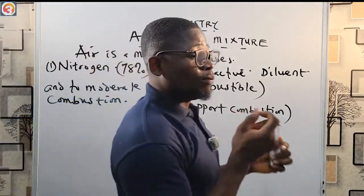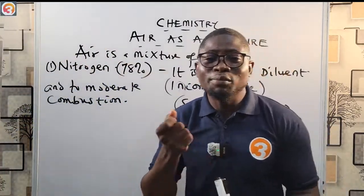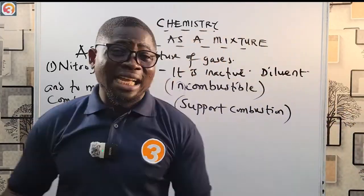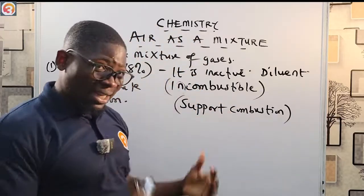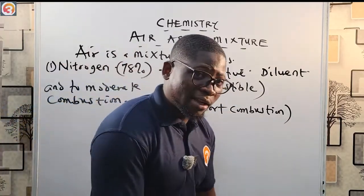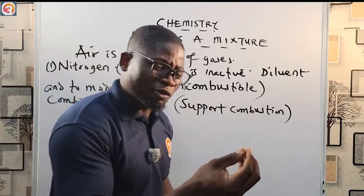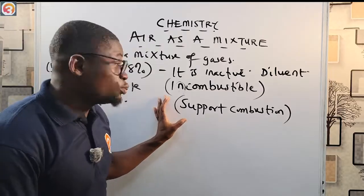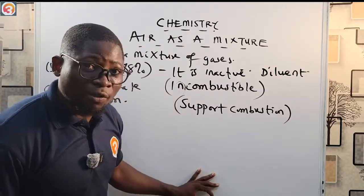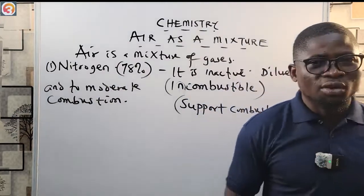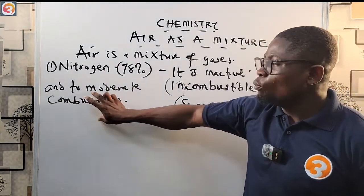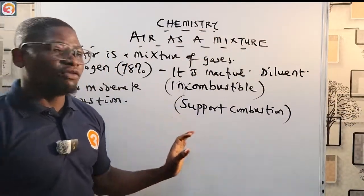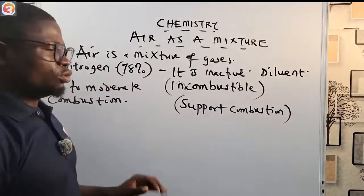If the air inside that tire were of the combustible type, the plane would catch fire. So nitrogen is used to moderate combustion — it moderates burning. Nitrogen is inactive and is used to moderate combustion. Another component of air is oxygen. Oxygen contains 21% of the total air composition.